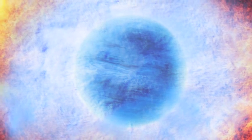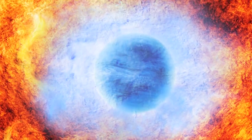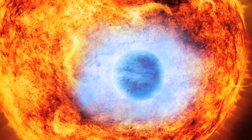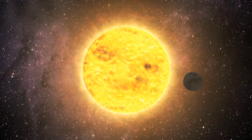HD 189733 is an enormous gas giant, over 100 times bigger than Earth. It orbits very close to its star.